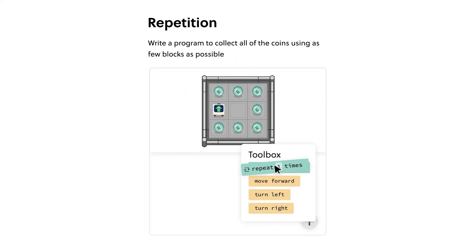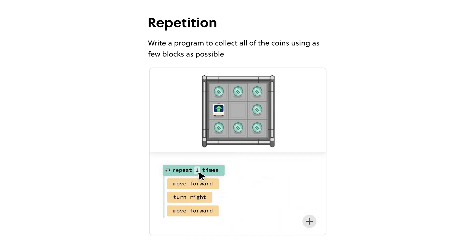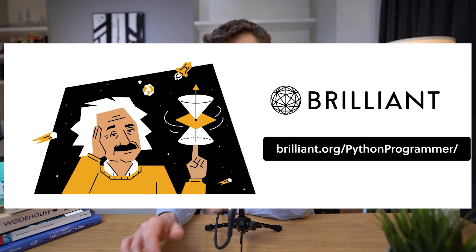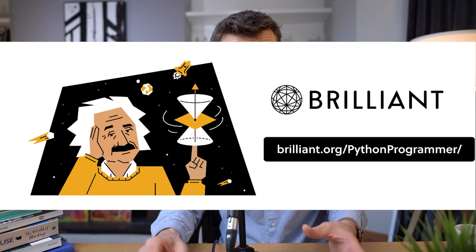Brilliant has thousands of lessons at levels ranging from beginner to university, and they add new ones every month. Thinking in Code is a recent addition — it gets you designing simple programs right from the start that solve real-world problems. The interactive challenges ensure you quickly develop an intuition for the underlying concepts. You can go to brilliant.org/pythonprogrammer and try everything Brilliant has to offer free for a full 30 days, or click the link in the description. The first 200 of you will get 20% off Brilliant's annual premium subscription.